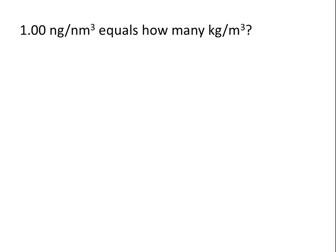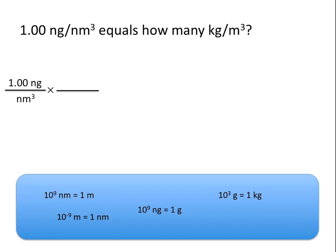Let's try one more example: 1 nanogram per nanometer cubed equals how many kilograms per meter cubed? We'll start by writing the given information: 1 nanogram per nanometer cubed. Again, we need to use a conversion factor. This time, let's convert nanometers cubed to meters cubed first. Remember, whenever you have a problem where you're converting two different sets of units, the order in which you convert those units is irrelevant.